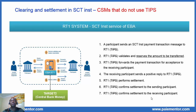I took RTL1 of EBA to illustrate, but you can take any other CSM that does not settle through TIPS. On the right, the processing steps have been listed and they are the same. I just replaced TIPS with RTL1, but there is a difference and it is highlighted on the bottom part of the picture. Here, as you can see, EBA RTL1 is connected to Target2, the system operated by the European Central Bank and used for the transfer of central bank money among financial institutions. We will now focus on what happens between RTL1 and Target2 to understand why that link is required.